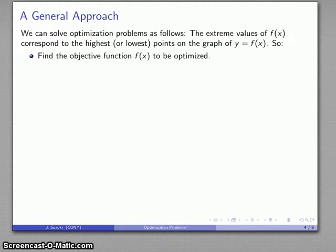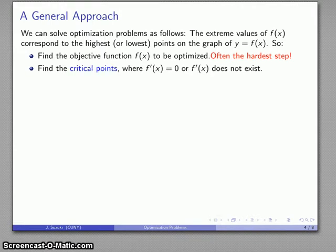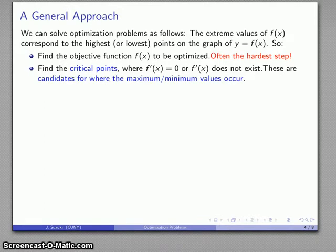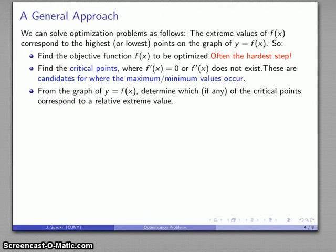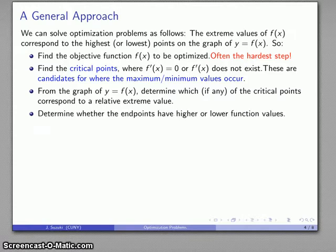That suggests the following. First, we want to find the objective function that we're going to optimize — this is usually the hardest step of the problem. The calculus is easy; the algebra and pre-calculus is where the difficulty tends to be. Next, I want to find the critical points — the places where the derivative is zero or the derivative fails to exist — as these are candidates for where the maximum or minimum values are going to occur. We can use this information to find the graph and determine which critical points correspond to a relative extreme value, and then evaluate endpoints to compare against relative extremes.